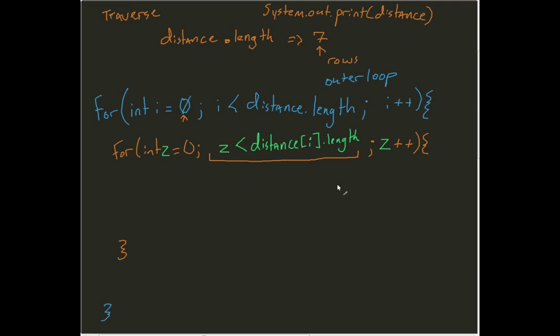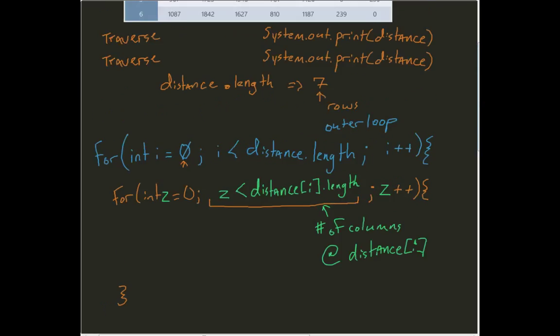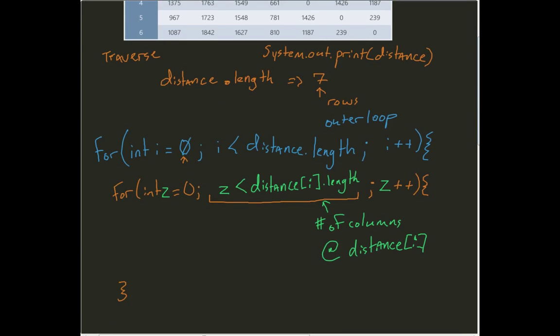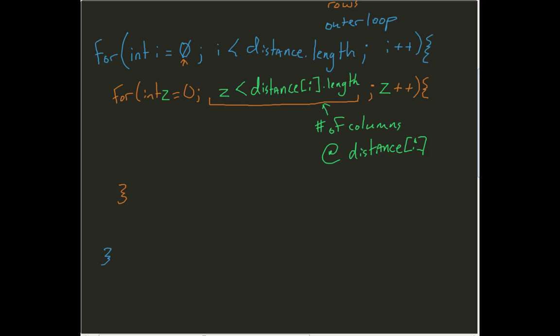What does this do? This is going to tell me the number of columns at distance[i]. If we notice, that's just going to constantly be 7, but it's a good rule of thumb because this will come back when we start talking about ragged arrays. Then I can come in here and do a simple System.out.print distance[i][z].